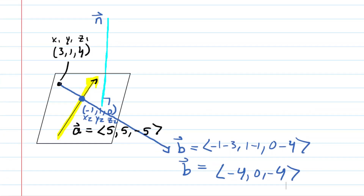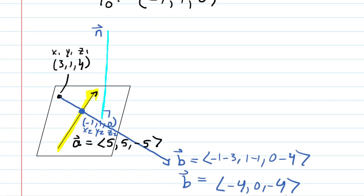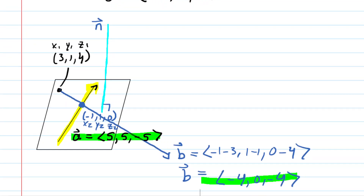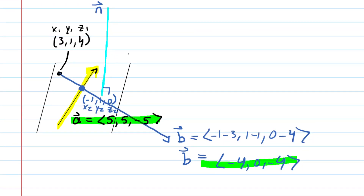Here comes the power of what we've been doing. We have two vectors: vector A, which is parallel to our plane, and vector B, which is also parallel to our plane. We want the normal vector. How can we use these two vectors that are parallel to the plane to find the normal vector? We do a cross product of A and B. That gives us a third vector perpendicular to both vectors, and therefore perpendicular to our plane.